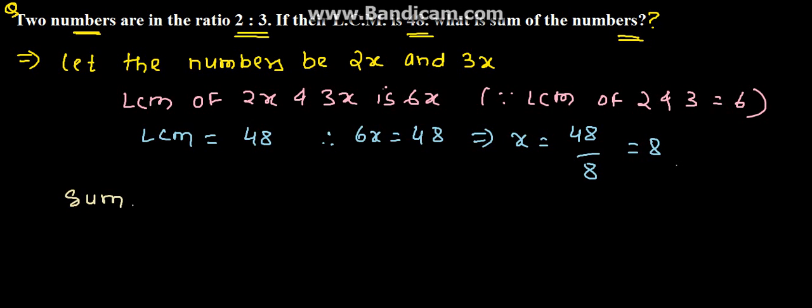From this we can derive the sum of the numbers. Sum of the numbers will be equal to 2x plus 3x. 2x and 3x are the numbers. Therefore, 2 into 8 plus 3 into 8, this is 5x, and 5 into 8 is 40.